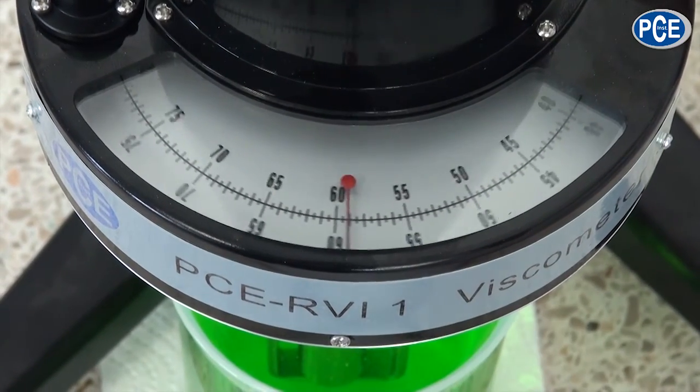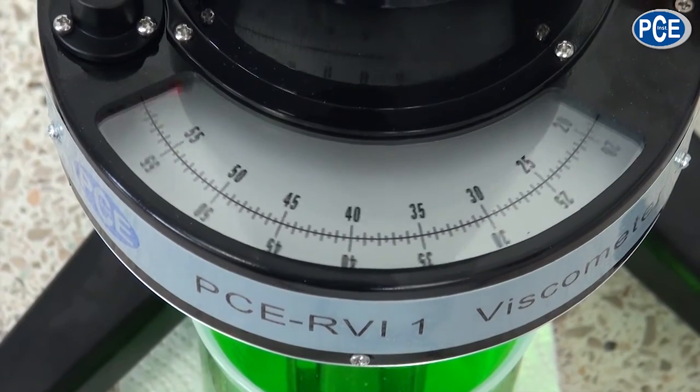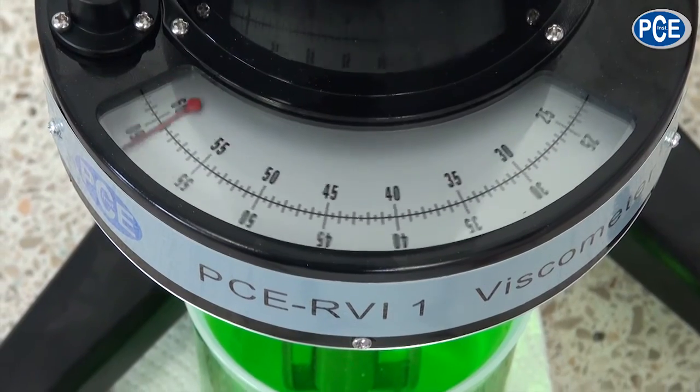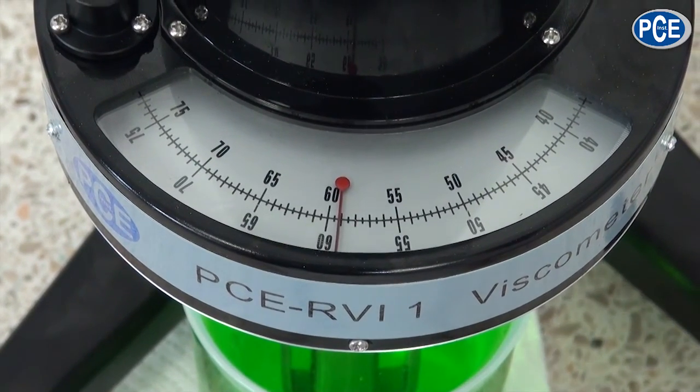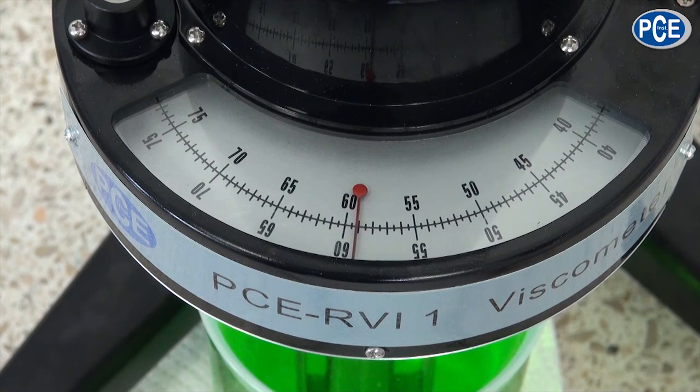How would from the scale value the right measured result be determined? For this you must know that the scale of the viscometer is a percent scale. I determine first the percent value. In this case 59%. By using a table I know through the rotation speed and the rotation body that the measuring error is 500 mPa·s. And the measured result is here exactly 59% of 500 mPa·s.